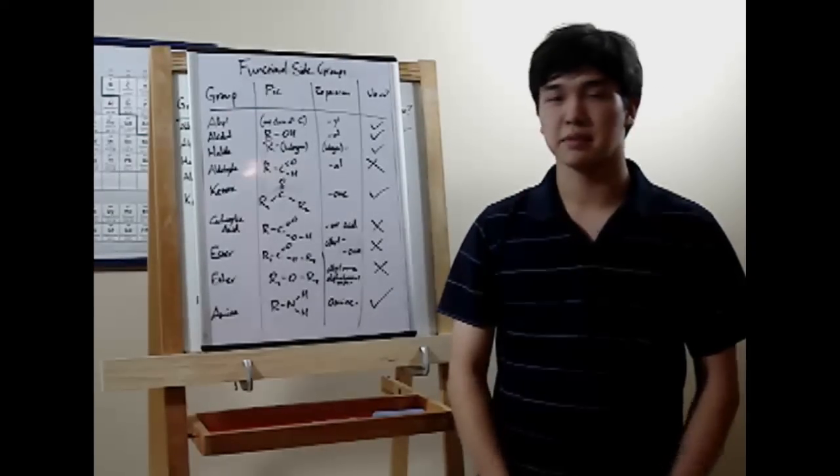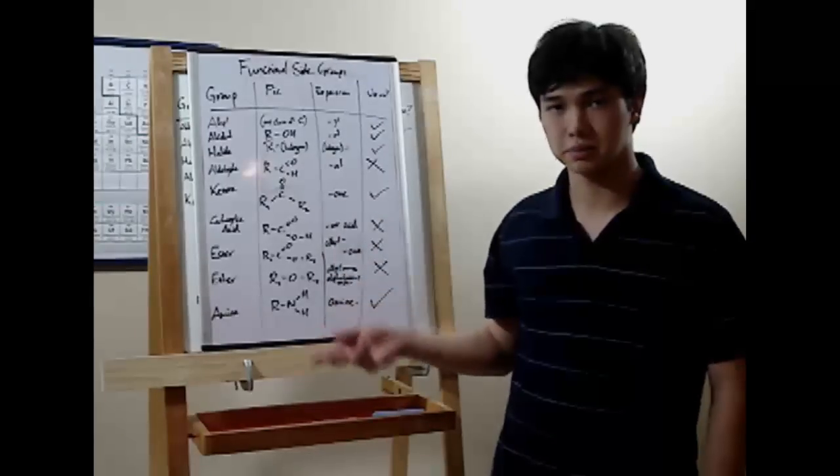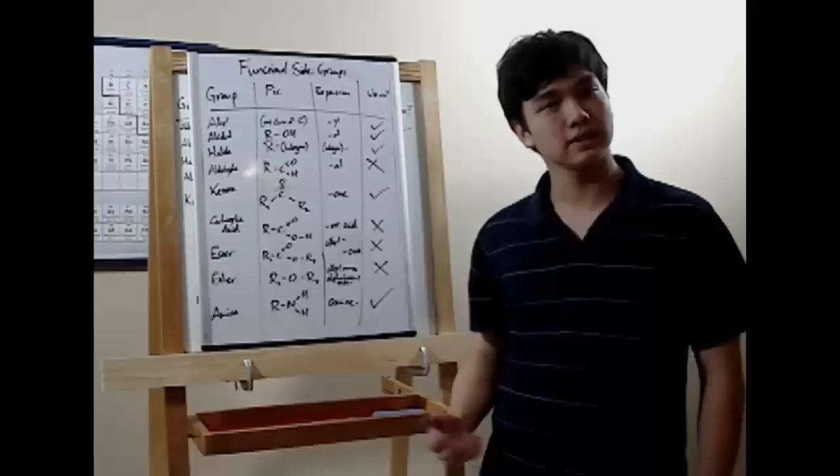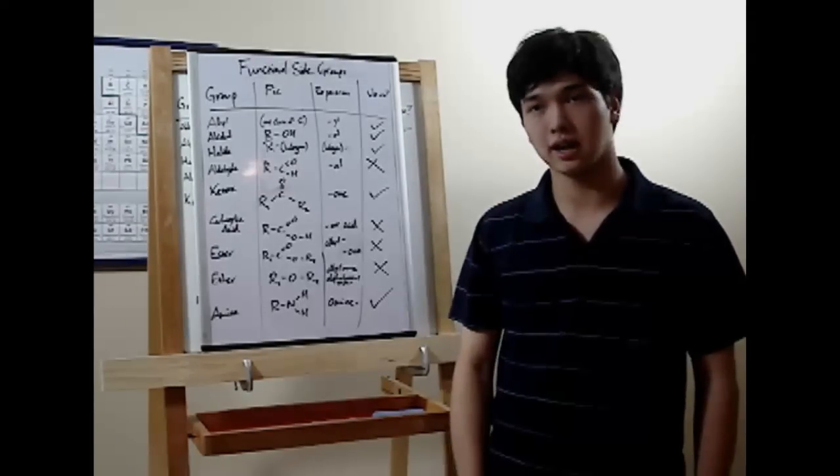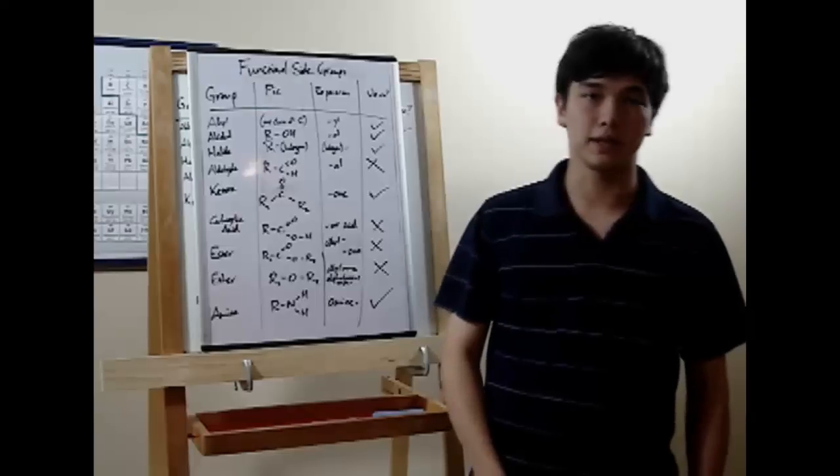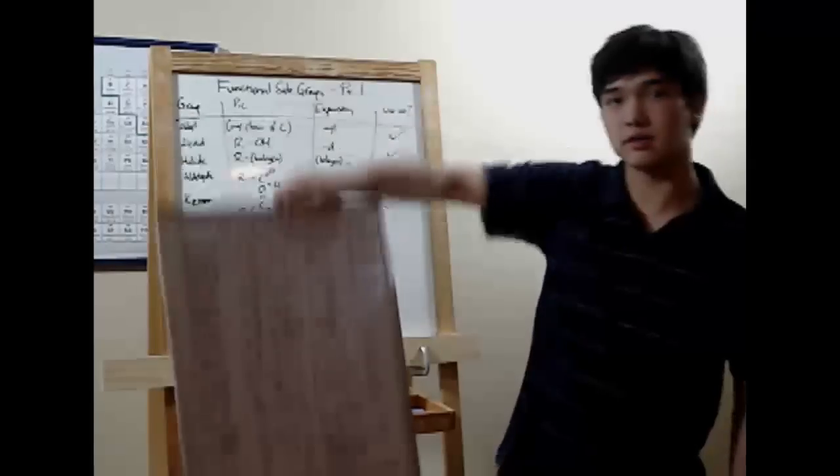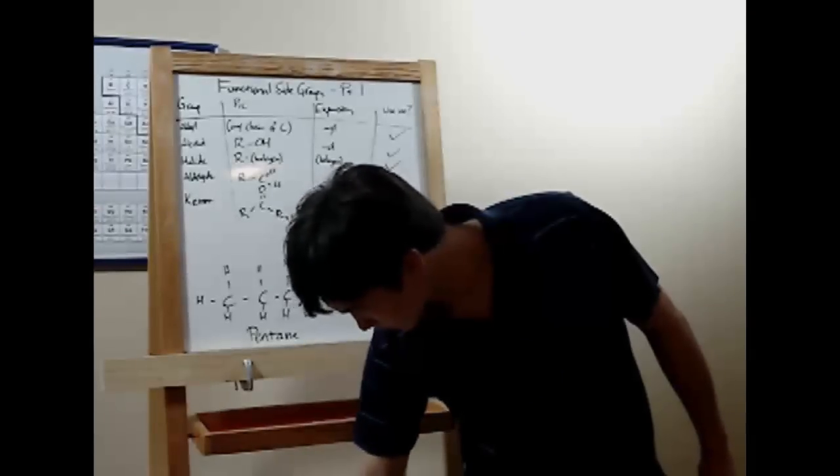Hi, I'm Brian Prier, tutoring high school chemistry. Today's topic is organic chemistry, and in particular, functional side groups. Functional side groups are the things that you can attach to a carbon chain other than hydrogen. This is a list of all the functional side groups you'll need for high school chemistry, but it's a very long list, so we're only going to cover the first five in this lesson and finish up in a later lesson.